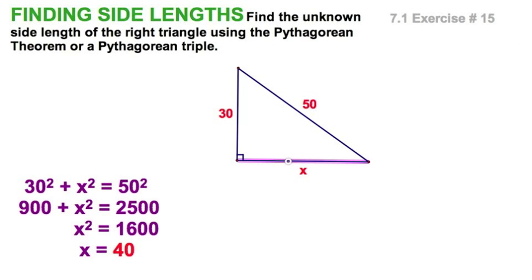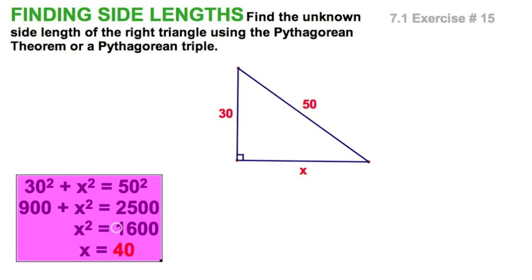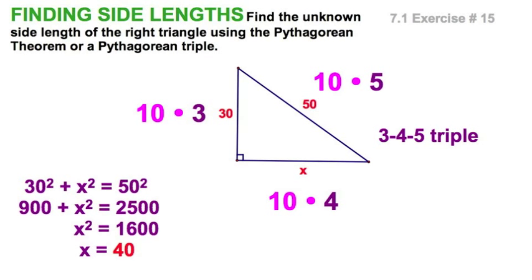Well, if I was solving for this leg, already got it over here, that would be the tedious method using the Pythagorean theorem on this one, because it's so easy when it's such a simple Pythagorean triple. 3, 4, 5 triple, 10 times 4, 40.